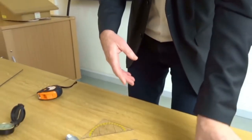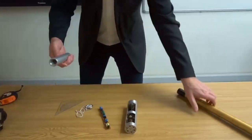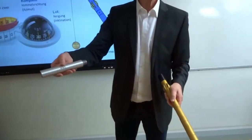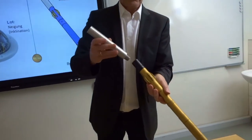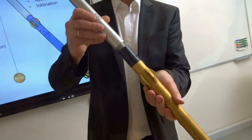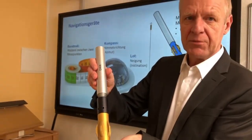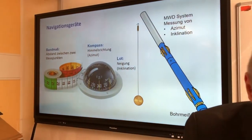As I said earlier, today everything is electronic and installed into a device which we call the Measurement While Drilling system — the MWD system. We attach it somewhere close to the drill bit at the bottom of the drill string, and with that we take measurements at regular intervals.